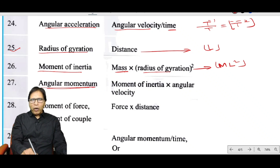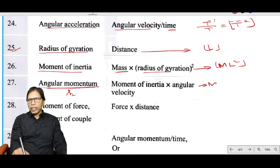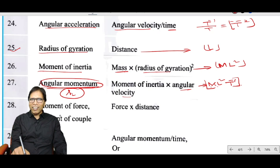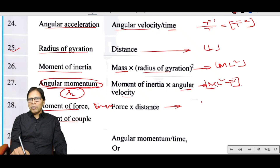Angular momentum has the same dimension as Planck's constant. It equals moment of inertia (ML²) × angular velocity (T⁻¹), giving ML²T⁻¹. Moment of force, torque, energy, work done, and moment of couple all have the same dimension: ML²T⁻².